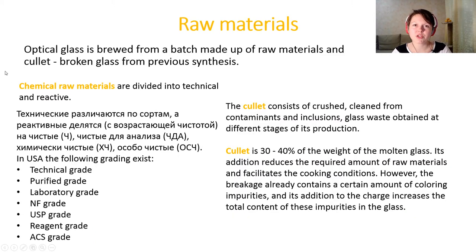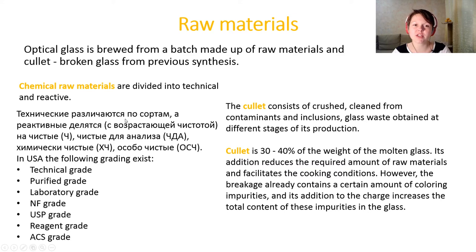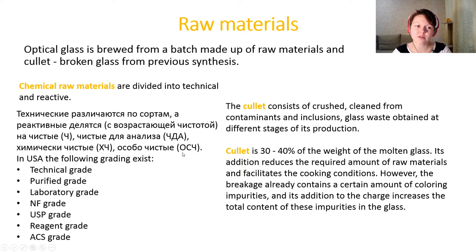Raw materials for glass synthesis can be of natural mineral origin or chemical nature. Chemical raw materials are divided into technical and reactive grades. Reactive raw materials are divided by purity — in Russia into 'chistye', 'chistye dlya analiza', 'khimicheski chistye', and 'osobo chistye'. In the United States another grading exists: technical grade, purified, laboratory reagent grade, and other grades.